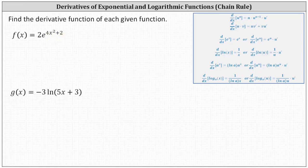Looking at our derivative formulas, to find f prime of x, we do not want to use the derivative formula — the derivative of e to the x with respect to x equals e to the x — because the exponent is not just x, it's four x squared plus two. This indicates f of x is a composite function, and we need to apply the chain rule.